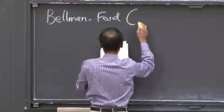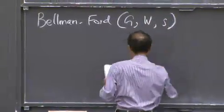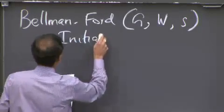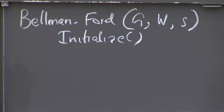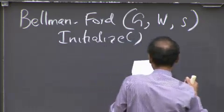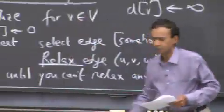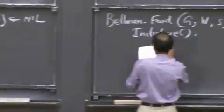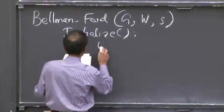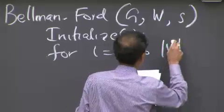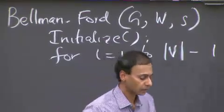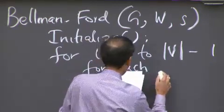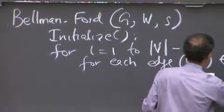Bellman-Ford takes a graph, weights, and a source s, assuming an adjacency list representation. After initialization — same as the generic case — the algorithm does v minus 1 passes. For i = 1 to |V| - 1, for each edge (u, v) in E, it relaxes every edge.